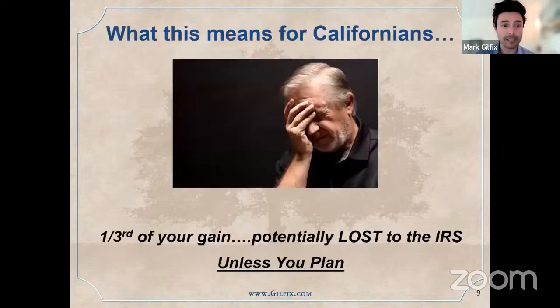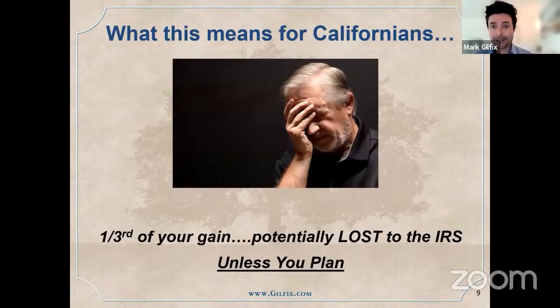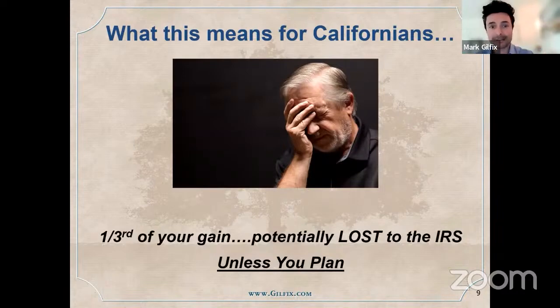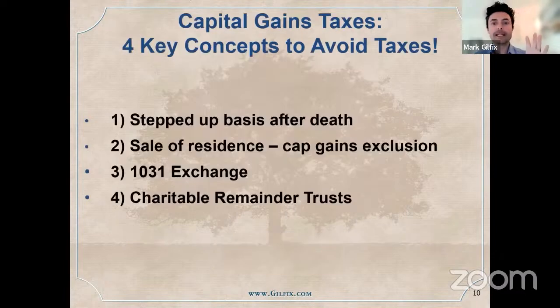If you're in California, at least if you're a high earner, a third of your gain could be lost to the IRS unless you plan. Four key concepts to address this.